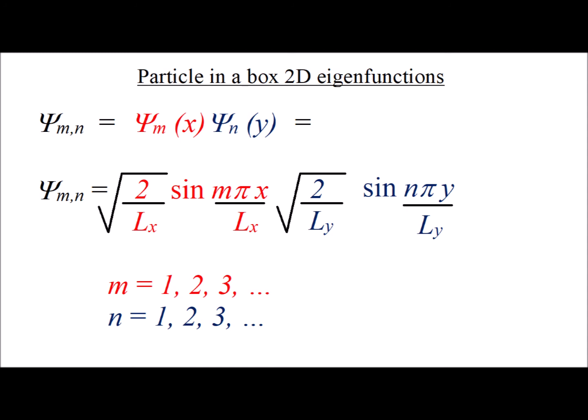For one dimension, we have the length of the box is L sub x and the quantum number we refer to as m. For the other dimension, the length of the box is L sub y and the quantum number is n. Recall that the quantum numbers for the one dimensional problem start at 1 and work up by integers.